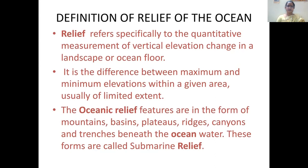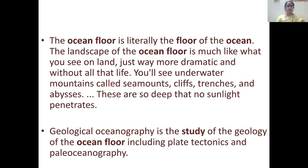The oceanic relief features are in the form of mountains, basins, plateaus, ridges, canyons, and trenches. We've heard about mountains, basins, plateaus, ridges, and canyons on the surface of the earth too - only trenches are something different we encounter in the ocean. That's why these forms of ocean relief are also called submarine relief, as they are deep under the water.